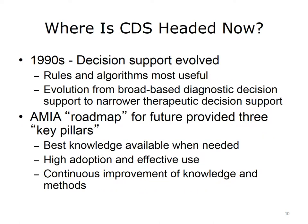Currently, decision support evolved in the 1990s in tandem with the growing use of electronic health records. Rules and algorithms were actually found to be quite useful and are currently used in modern systems, although not in a diagnostic decision support way. There was an evolution from broad-based diagnostic decision support to more narrow therapeutic decision support. A number of leaders in the field recently published a roadmap for decision support. The key pillars are having the best knowledge available to the physician when needed, ensuring high adoption and effective use, and continually improving the knowledge and methods.